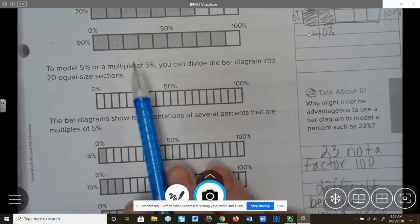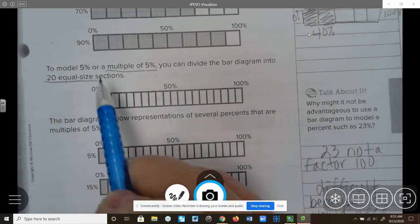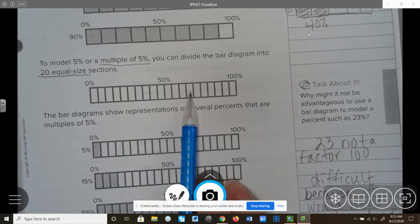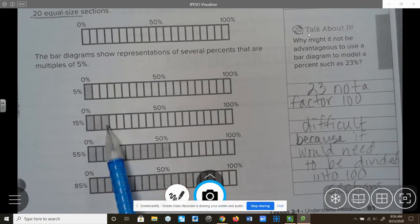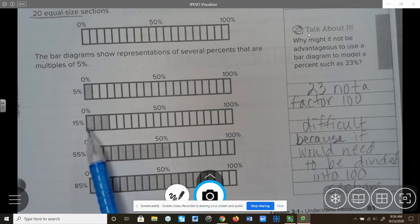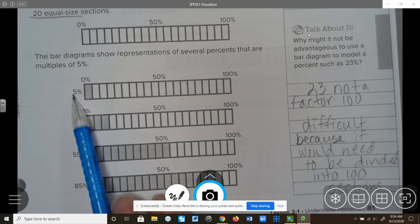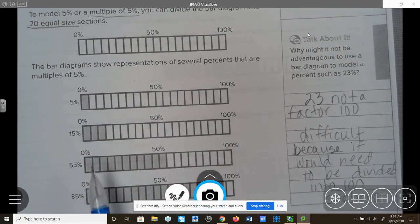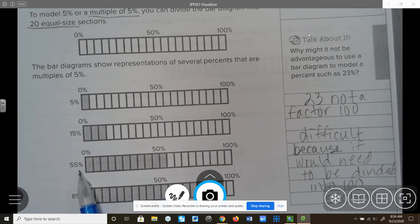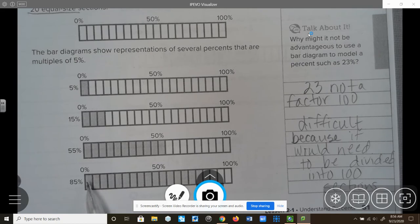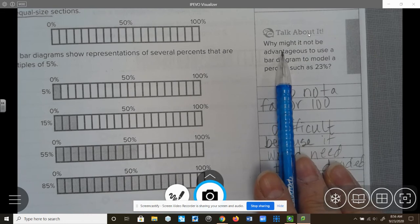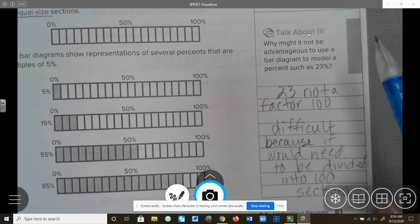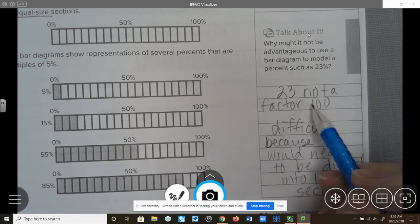Continuing on. To model 5% or multiples of five, we would have to divide it into 20 equal sections. And as you can see here, there are 20 sections. And again, just like up above, you can show one of the sections is 5%. Three sections, 15%. Three times five is 15. One times five is five. Remembering the multiples of five. Eleven sections, 55%. So 11 times five is 55. And then we have 17, which would make 85%. The question on the side says, talk about it. Why would it not be to your advantage to use this bar diagram to model a percent of 23?